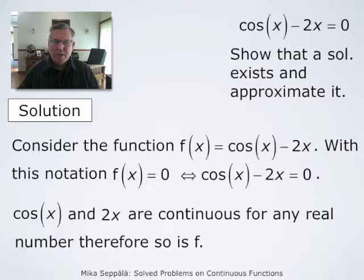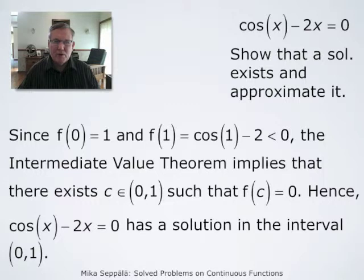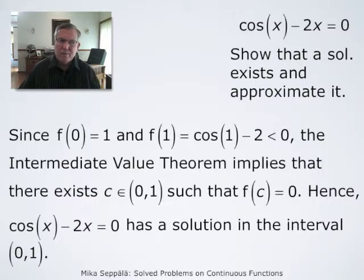We observe that cos(x) and 2x are continuous for any real number, so f is also continuous for all values. f(0) = 1. f(1) = cos(1) - 2, which is negative. Therefore, by the intermediate value theorem, there is a point c between 0 and 1 such that f(c) = 0. Hence, a solution exists in the interval from 0 to 1.